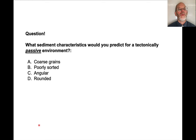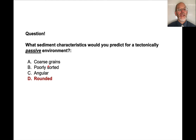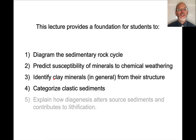What sediment characteristics would you predict for a tectonically passive environment — a region that's very stable? The answer is rounded. I would expect a lot of transport, so many grains would be rounded, not angular, and not poorly sorted. Typically what we see in passive environments are well-rounded, mature sediments. At this point I hope students have a basic understanding of how to categorize clastic sediments — both in terms of grain size, maturity, and proportions of quartz, feldspar, and rock fragments.